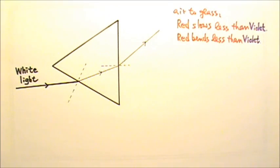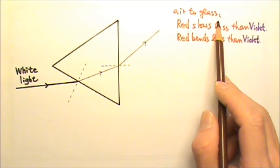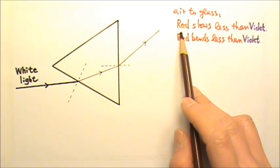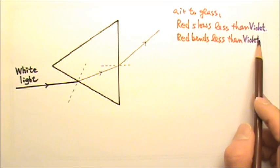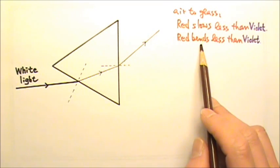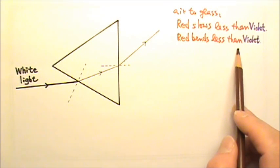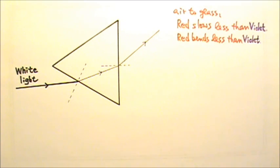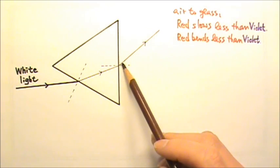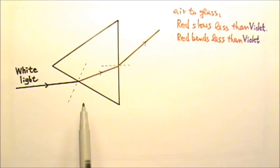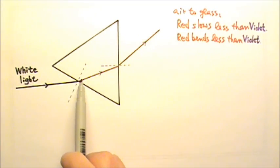Now let's consider dispersion. When light goes from air into glass, it slows down. But red light does not slow down as much as violet light. Therefore, red light does not bend as much as violet light in this refraction. So if I make the ray I drew earlier the red light, violet would bend more right over here.